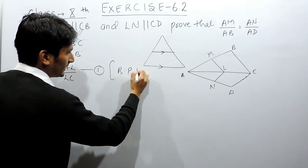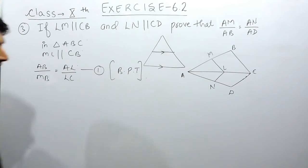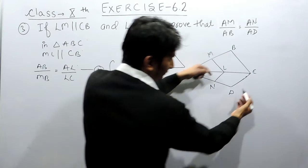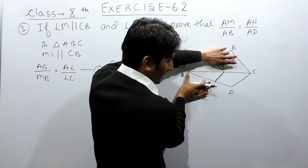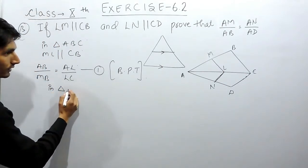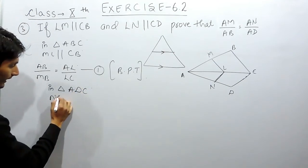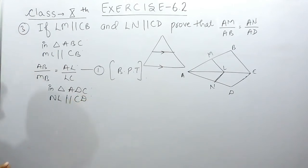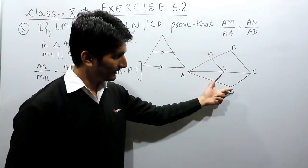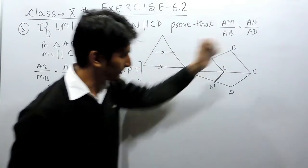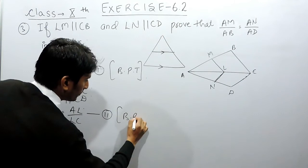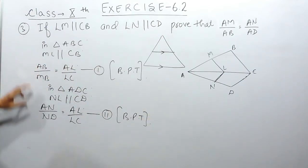Similarly, in triangle ADC, LN is given parallel to CD. If this line is parallel to CD, it must cut the two sides in equal proportion. So in triangle ADC, since NL is parallel to CD, we get: AN upon ND = AL upon LC. This is our second equation, again by the Basic Proportionality Theorem.